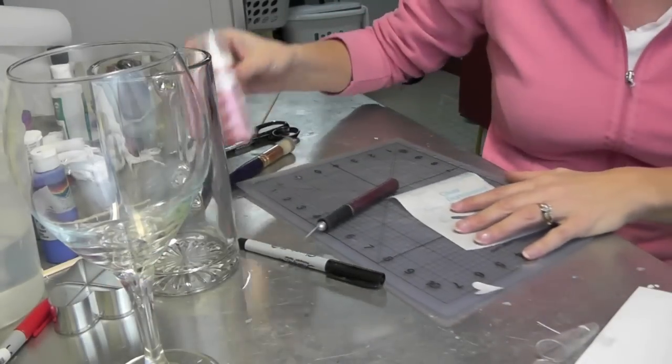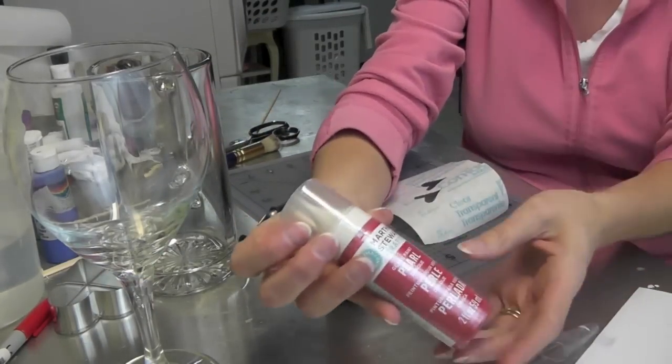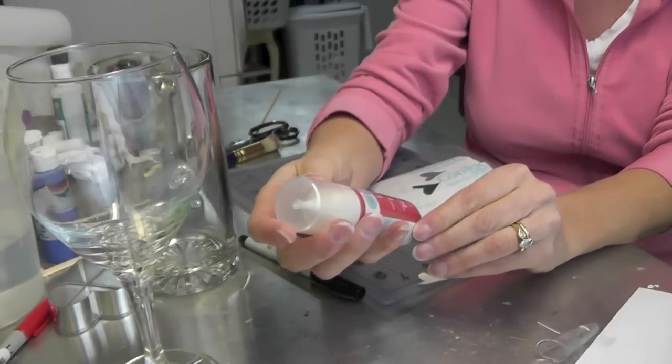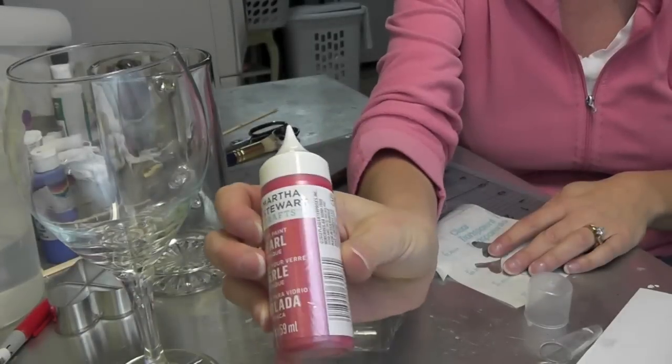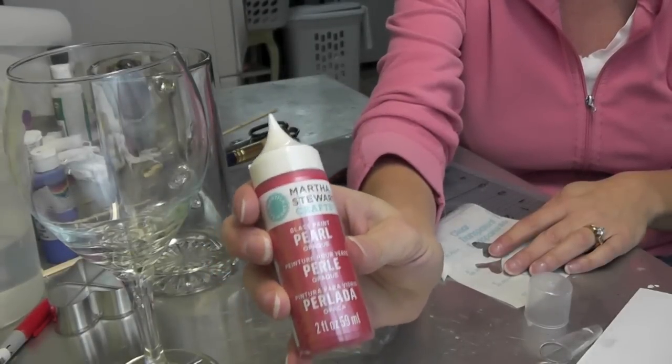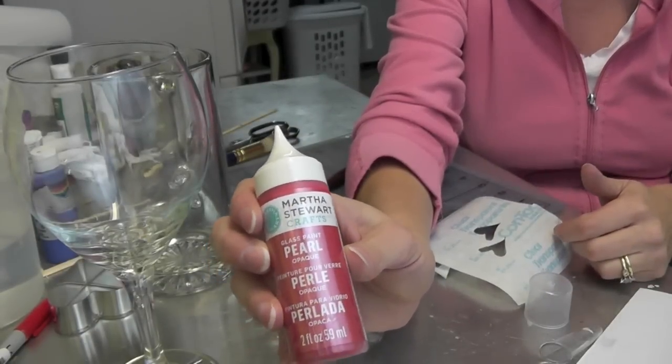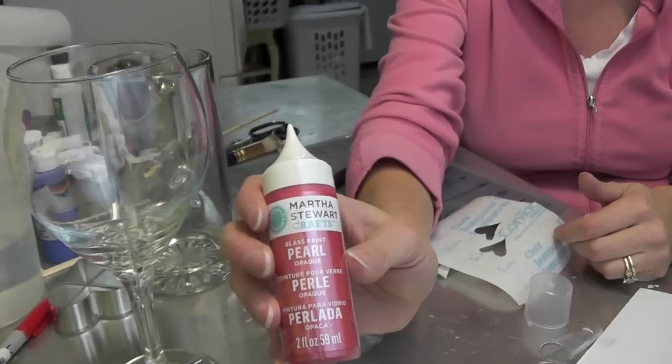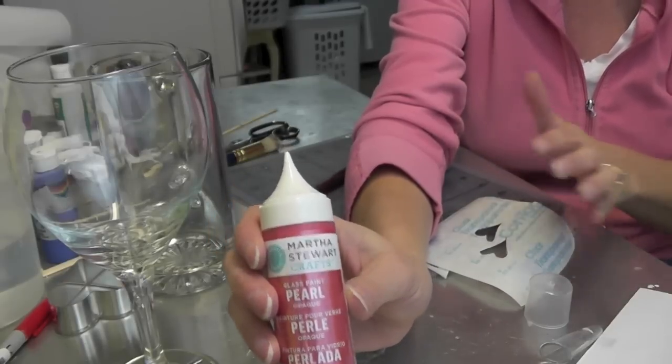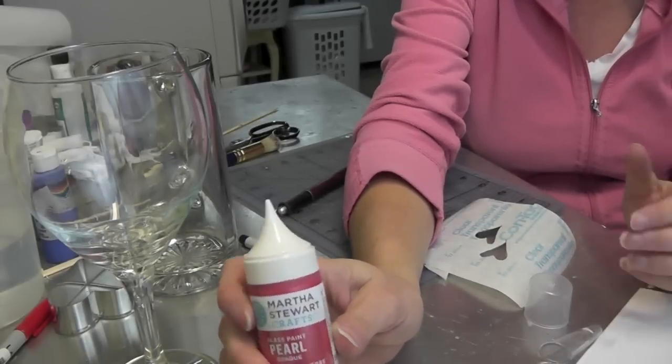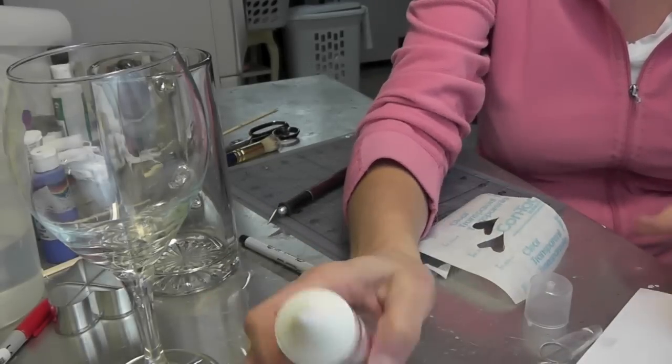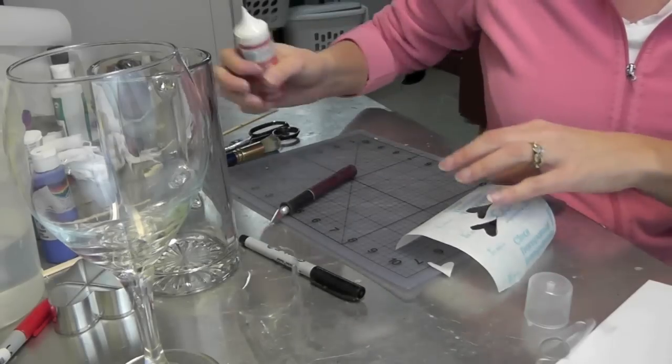The product that I'm using is Martha Stewart's pearl glass paint. Now this glass paint is one that we can put in the oven, and you can go on her website and it'll give you the full directions. Once you bake it and everything, it can go into the top rack of the dishwasher. You don't have to hand wash it even. So that's always nice.